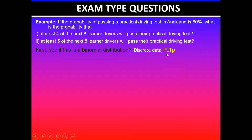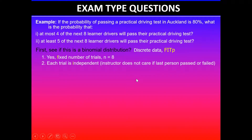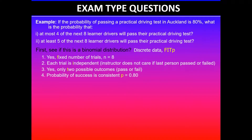We'll quickly check if it meets the four conditions of binomial distributions. First, it has a fixed number of trials — in this case, eight learner drivers. Second, each trial is independent — the instructor will not care if the last person passed or failed the driving test. Third, it has only two possible outcomes, because the driver can either pass or fail the test. Fourth, the probability of success is consistent — in this case, it's given as 0.8, which is 80%. As this meets the four conditions of binomial distribution, we are good to use binomial distribution.